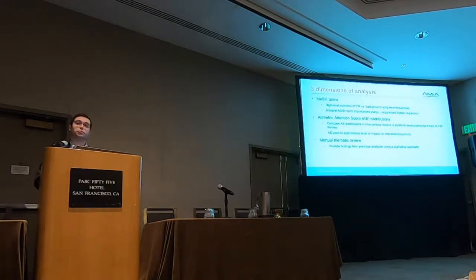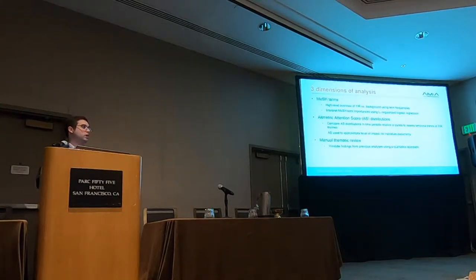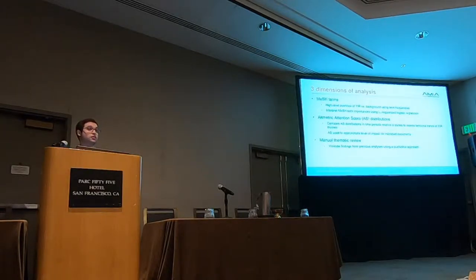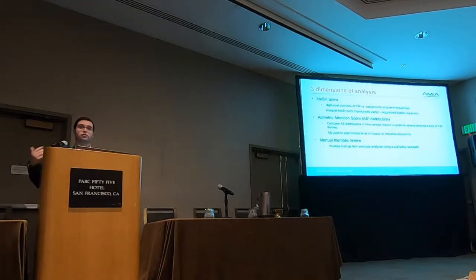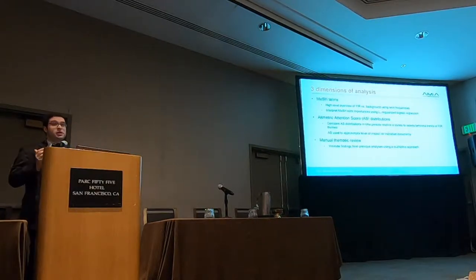The second dimension of analysis used altmetric attention score distributions. Altmetric scores aggregate various metrics that quantify the amount of attention a paper has received in the media, as well as citations and other measures. We used these to compare attention score distributions and time periods relative to what we call bursts, in order to assess the temporal trend of Year-in-Review themes over time and quantitatively assess the way different topics are waxing and waning. We say that attention scores approximate the level of impact of these papers in the field.